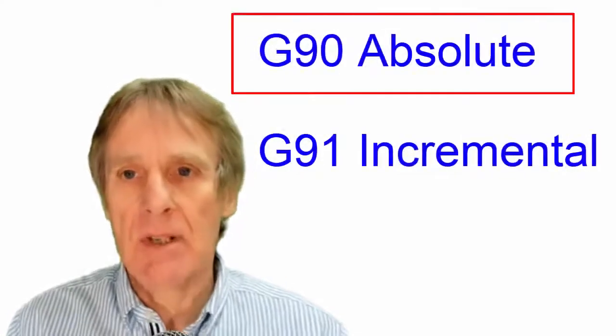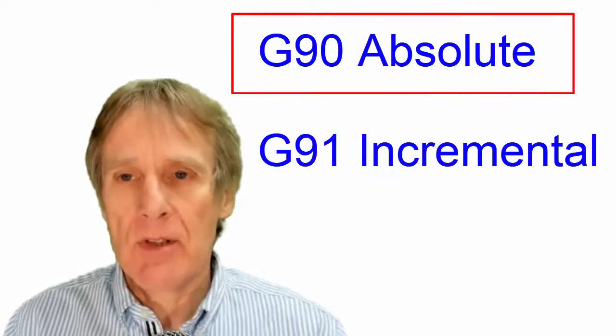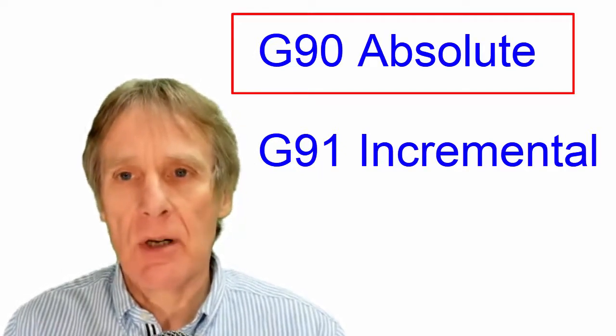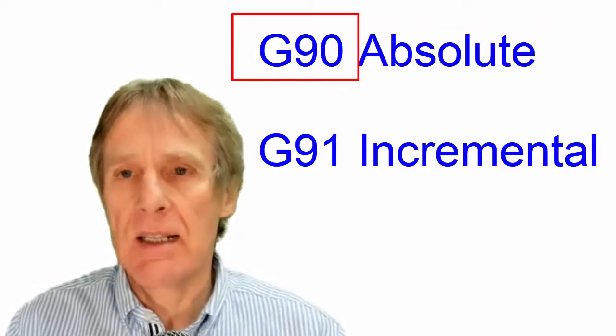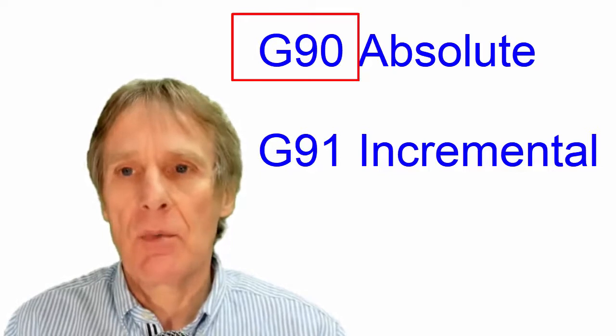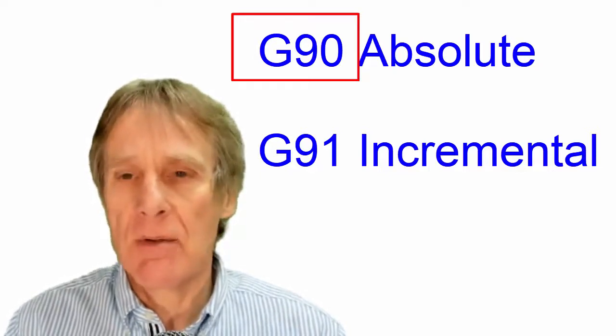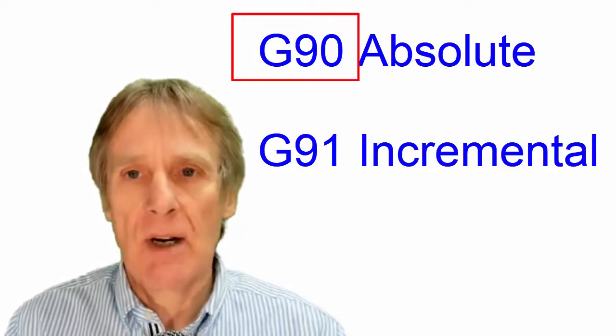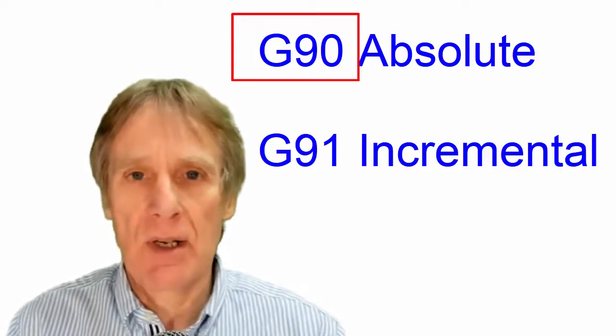This section is about absolute and incremental programming. First, we're going to look at absolute programming, which is G90. G90 is the common way to program and it's the default. Generally speaking, we would be using G90, and when you get an XY figure or a Z figure, normally it's assumed that it would be an absolute figure.